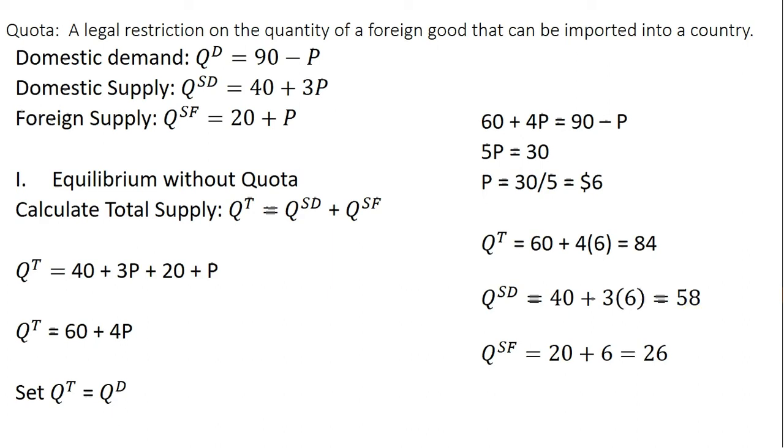And then finally, the foreign suppliers will be bringing 20 plus the price. The price is $6. They'll be bringing 26 units to the market. And then notice here, 58 plus 26 gets us back to 84.